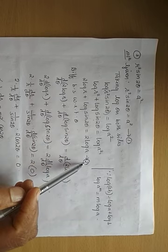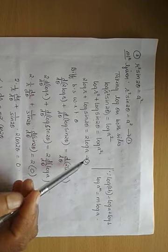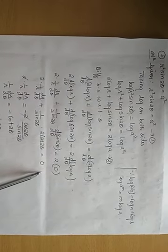Once we finish simplifying, mark it as equation number 2. So, differentiating both sides with respect to theta.